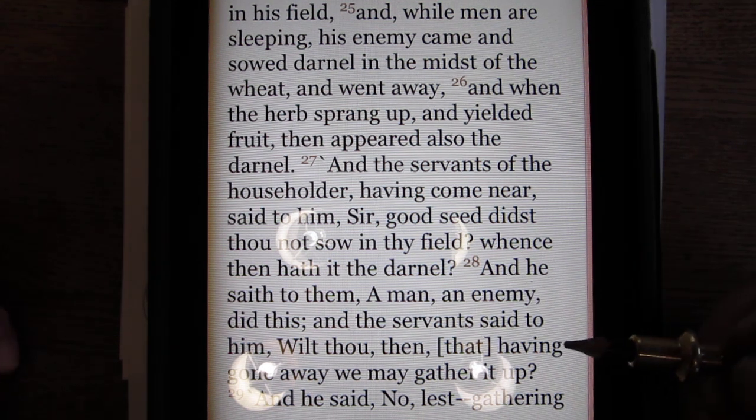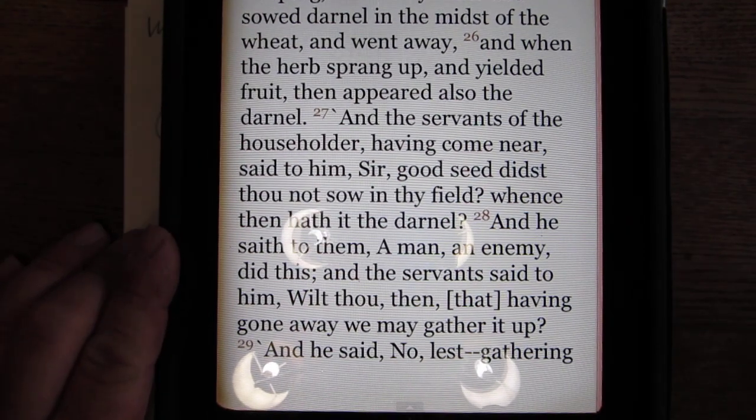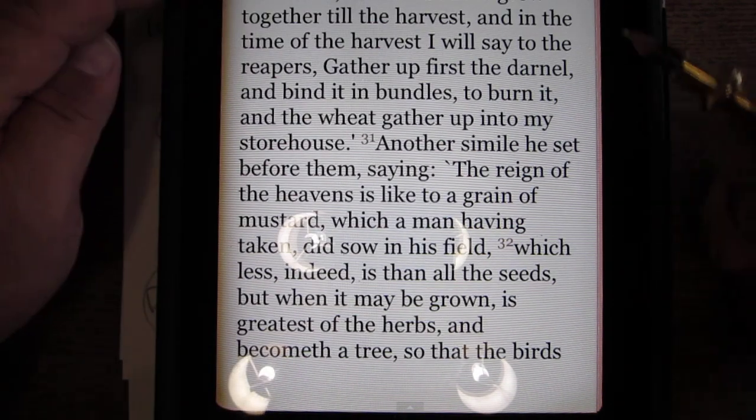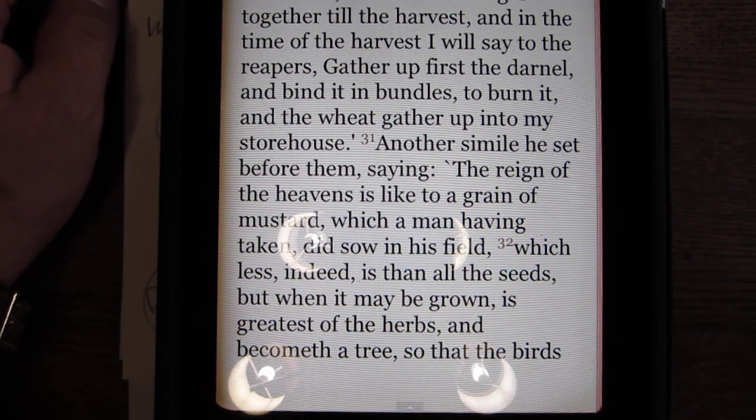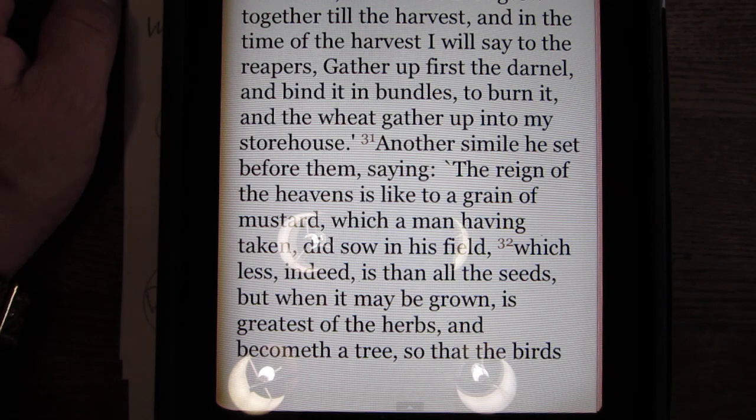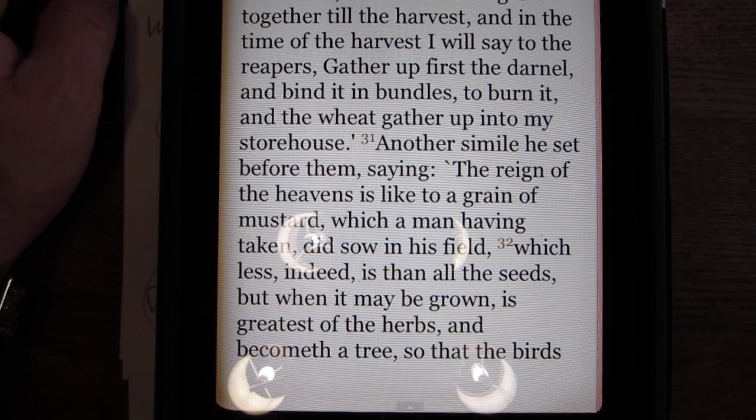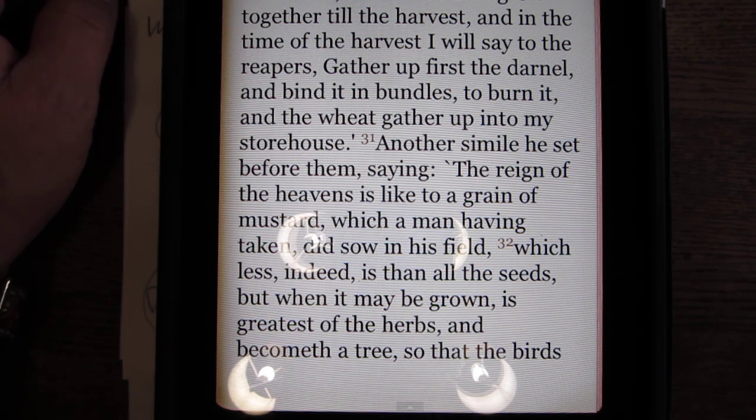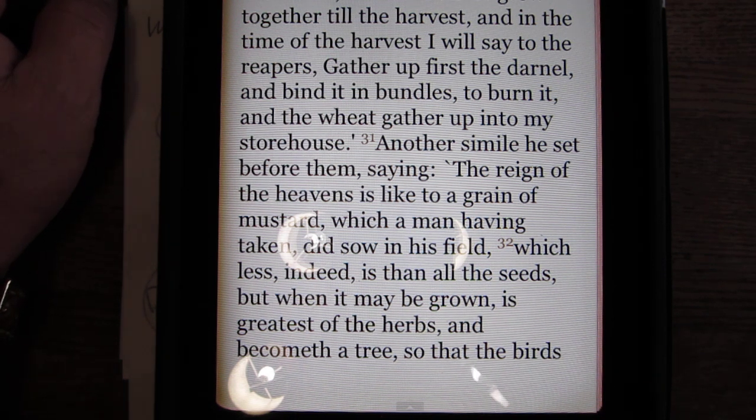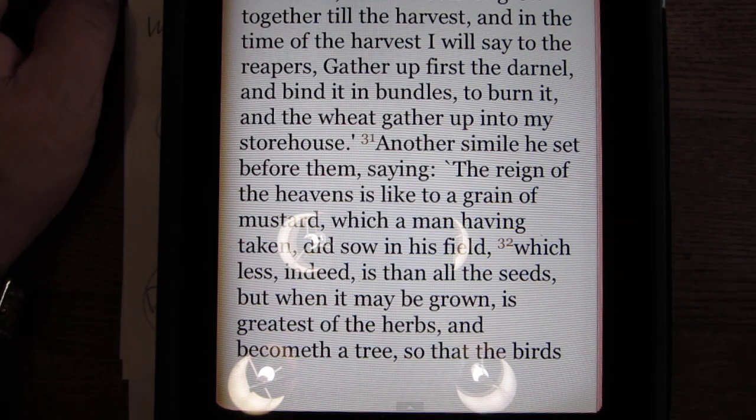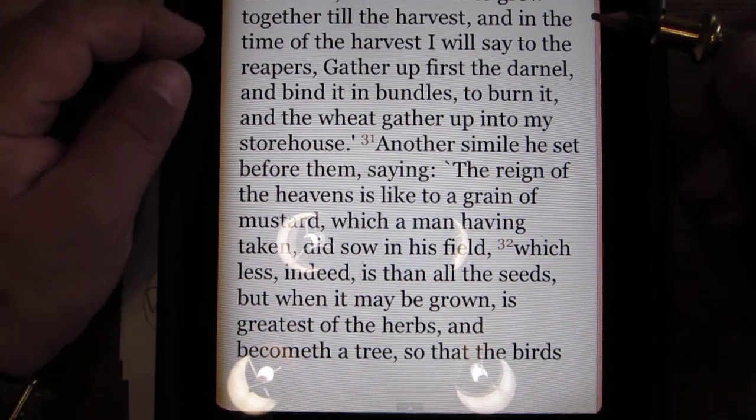And the servants said to him, Wilt thou then, having gone away, we may gather it up. And he said no, lest gathering up the darnel, ye root it up with the wheat. The servants of God know the difference between the wheat and the darnel. And they know it pretty quick. They're not waiting, they don't want to wait until harvest time. But, God said, man said, wait. Why? Because you don't want to take up the wheat, the precious wheat.